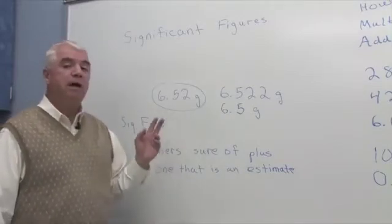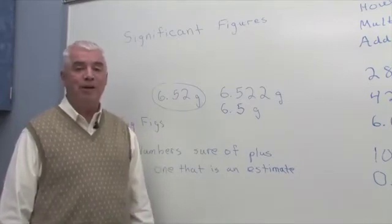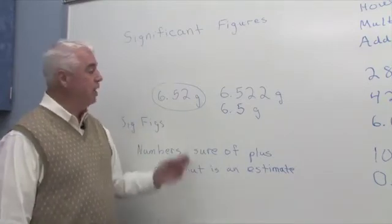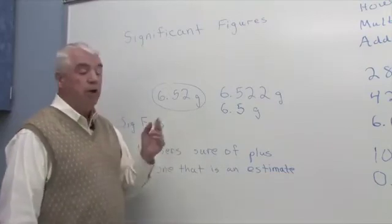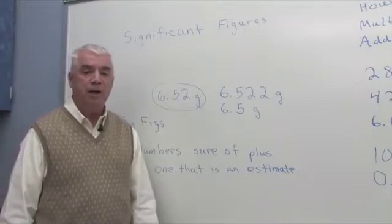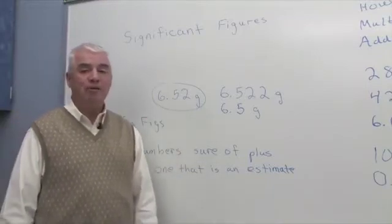We get numbers typically when we measure something or when we carry out a calculation. For example, you might be in a laboratory experiment and using a centigram balance weigh out something and record this number, 6.52 grams.